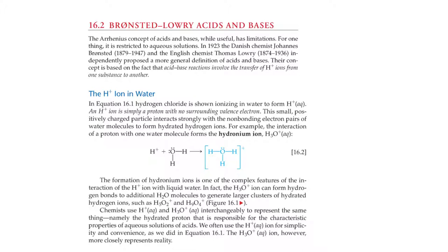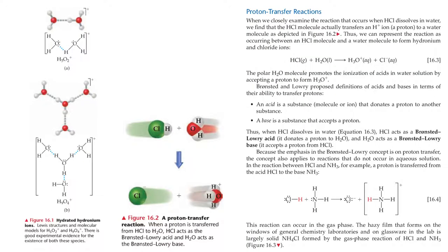The formation of hydronium ions is one of the complex features in the interaction of hydrogen ions with liquid water. In fact, the hydronium ion can form hydrogen bonds to additional water molecules to generate larger clusters of hydrated hydrogen ions, such as H5O2+ and H9O4+. Chemists use hydrogen ions and hydronium ions interchangeably to represent the hydrated proton responsible for the characteristic properties of aqueous acid solutions. We often use the hydrogen ion for simplicity, but the hydronium ion more closely represents reality. Figure 16.1 shows hydrated hydronium ions with Lewis structures and molecular models for H5O2+ and H9O4+; there is good experimental evidence for the existence of both of these species.